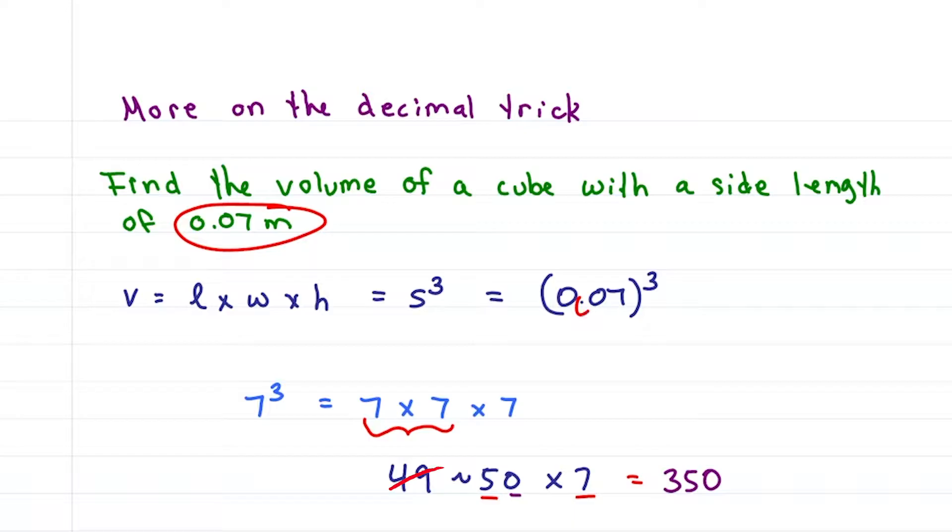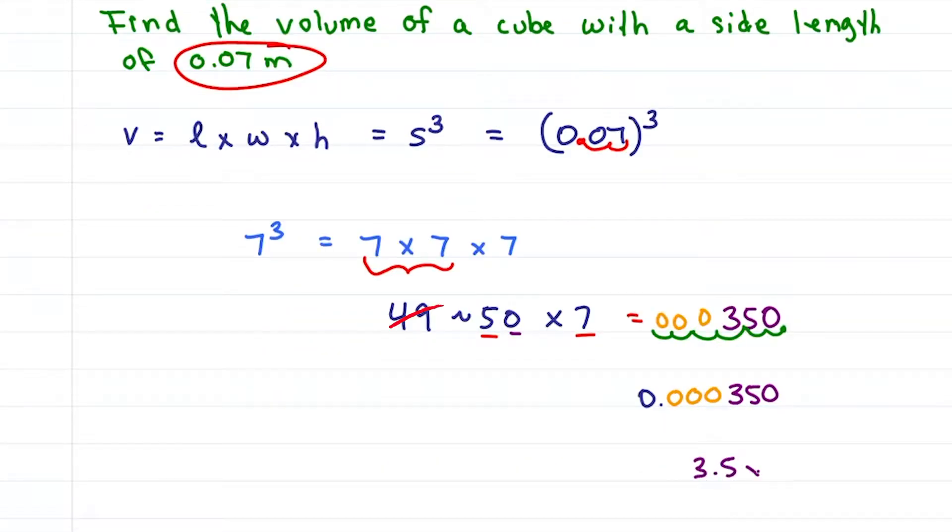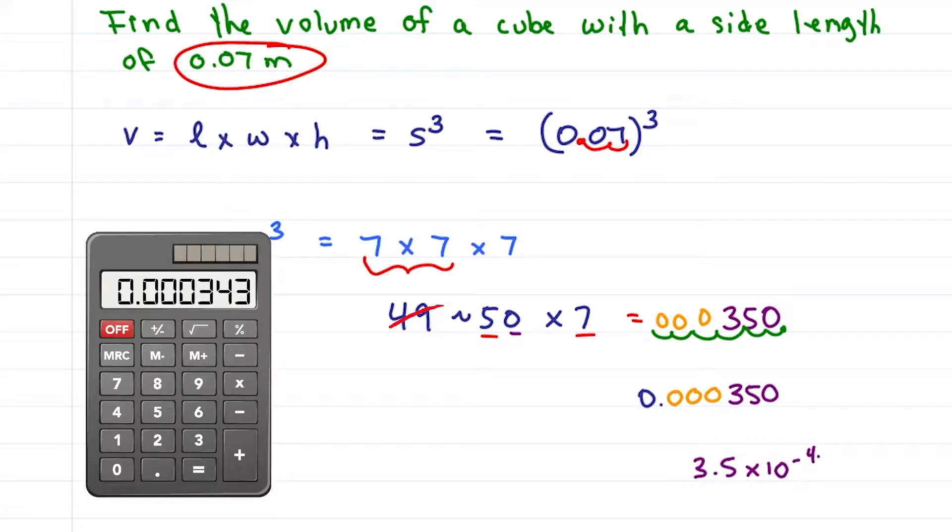Next, we'll raise the decimal to the third and that means we count the decimal spaces three times. That's two decimal spaces, one, two, second time and third time. That's 0.00035 or 3.5 times 10 to the minus fourth. Calculator says 0.000343 which on the MCAT is close enough.